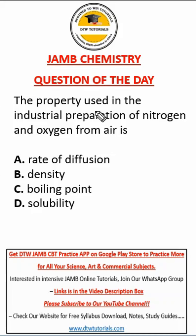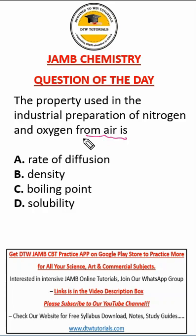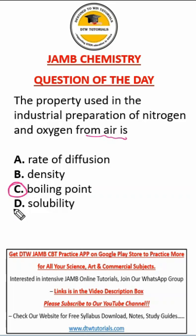We have a chemistry question here. It says the property used in the industrial preparation of nitrogen and oxygen from air is: A, rate of diffusion; B, density; C, boiling point; D, solubility. The right answer here is the boiling point.